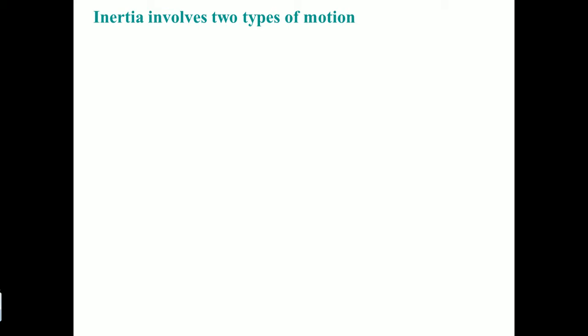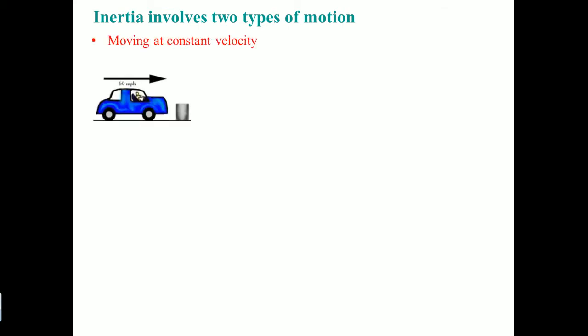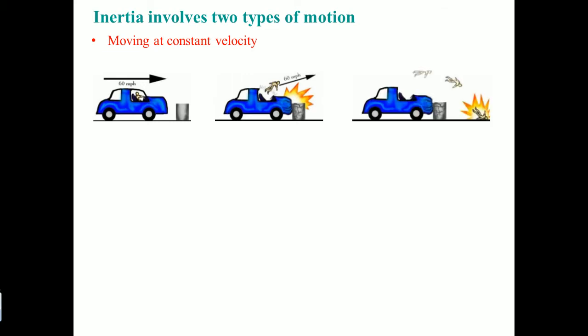A great visualization of inertia involves two types of motion. An object moving at constant velocity: here a person is in a car driving 60 miles per hour to the right. It hits a block — the car stops, but the person continues at speed because there's nothing holding them. So the person flies until hitting the ground at 60 miles per hour. This is the reason why you should wear a seatbelt — because of the law of inertia, an object will continue to move until acted upon by an external force.